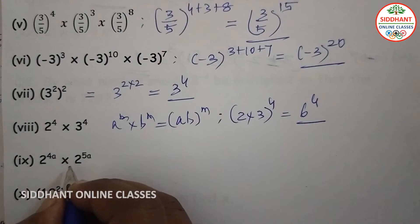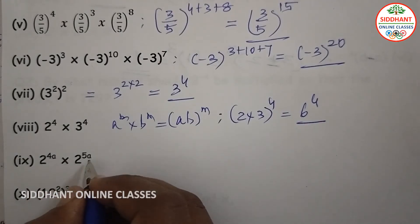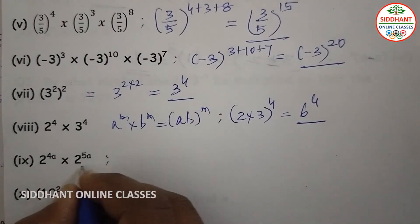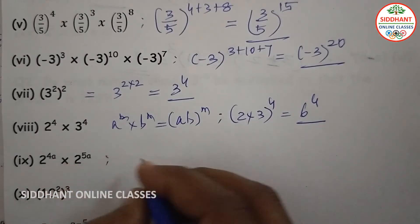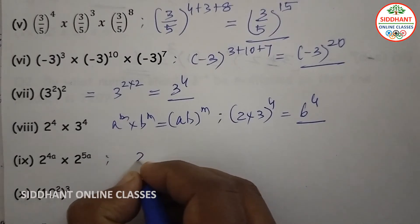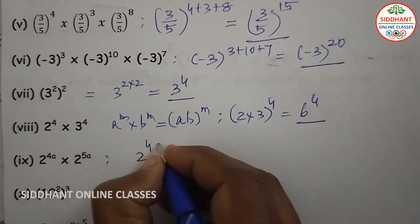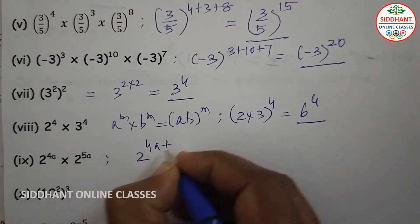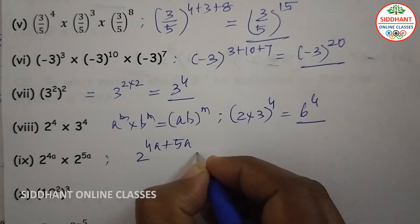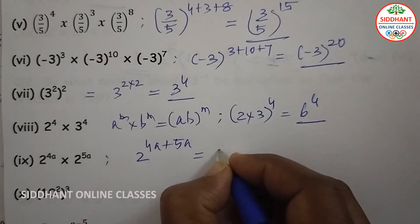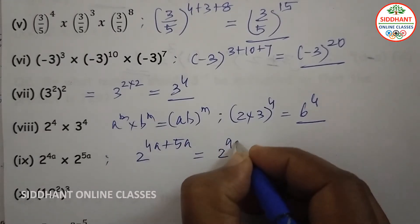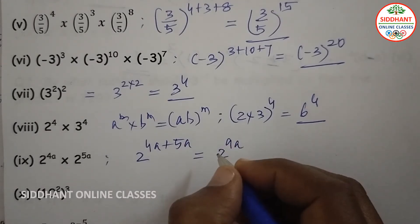Ninth one: 2 to the power of 4a into 2 to the power of 5a. Bases are same, so we add the powers: 2 to the power of 4a plus 5a, that will be 2 to the power of 9a.